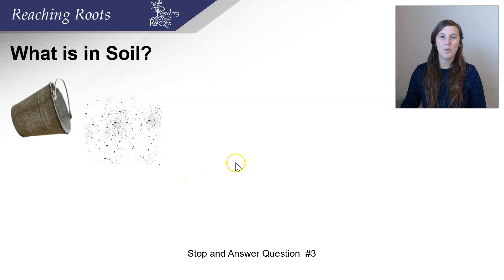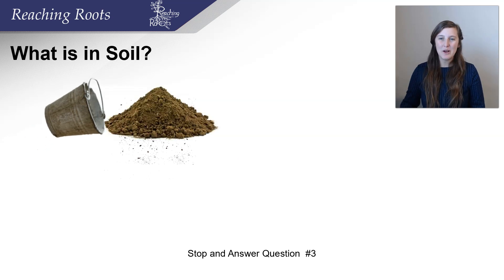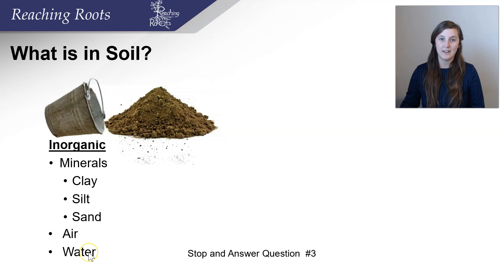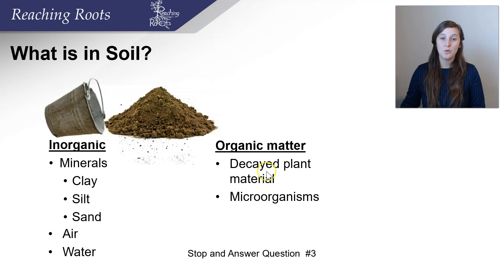Now that we've covered the importance of soil, let's dump out a bucket and see what's inside. What you'll find is important. There are inorganic components — minerals. The main minerals found in soil are clay, silt, and sand. You'll also find air and water. There's also organic matter, which includes decayed plant material and microorganisms. Let's look at a pie chart and see how much of each is in soil on average.